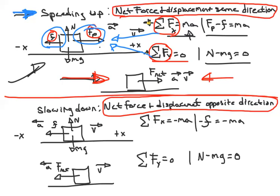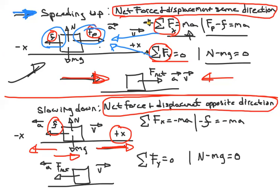When slowing down, same situation — the box is moving to the right but there's no applied push force. The only force in the x direction is friction, and it's opposite the direction we're moving. We know that friction is going to slow it down and act as the net force since it's the only force in the x direction.